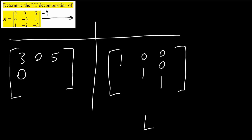I can do that if I say negative 4/3 R1 plus R2. I will multiply the 3 by negative 4/3 to get negative 4, plus R2. So negative 4/3 times 3 plus 4 gives us 0. Next, negative 4/3 times 0 plus negative 5 gives us negative 5 — it doesn't change. Then negative 4/3 times 5 is negative 20/3 plus R2, which is 1. So negative 20/3 plus 1 gives us negative 17/3. And here's the trick: this number will be the opposite of negative 4/3, so it will be positive 4/3.